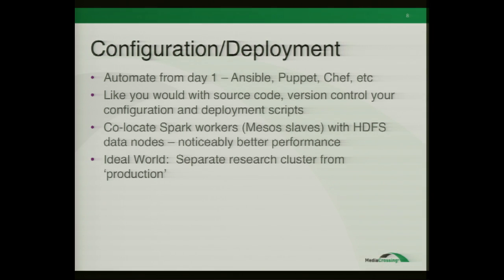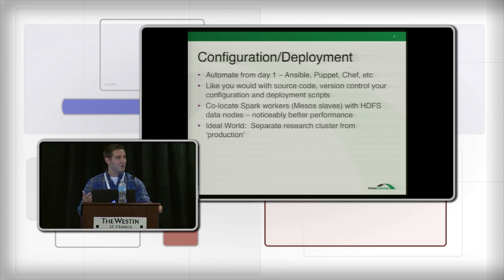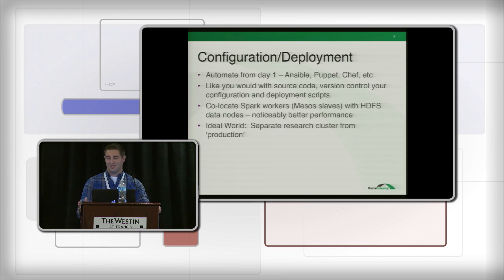A couple of obvious things for ops people: automate your configuration deployment from day one. It will make your life so much easier, especially when you want to upgrade Spark. We use Ansible — Puppet and Chef work just as well, that's a matter of personal taste. The important thing is that when it's automated and version controlled, it makes it very easy to upgrade, roll back, and track your diffs as you go.